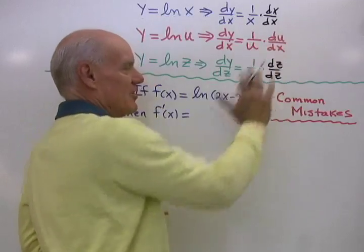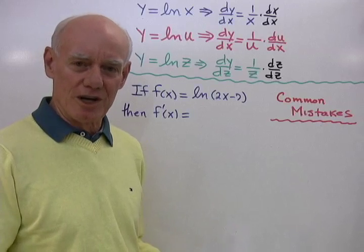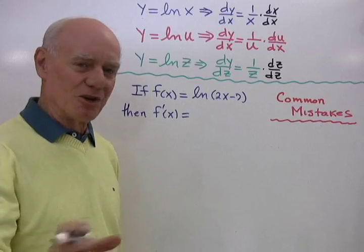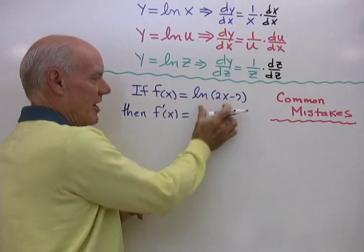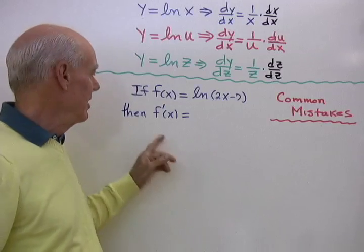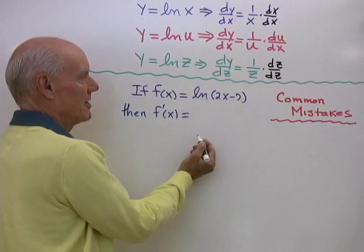So in fact, really these all look exactly the same, and they describe the way you want to work when it comes to working with logarithms. So let's apply it to this simple problem right here. If f of x is equal to natural log 2x minus 7, so f prime of x, I want to differentiate this with respect to x.